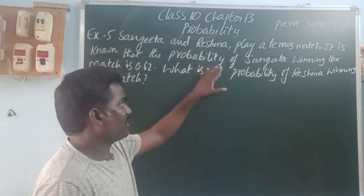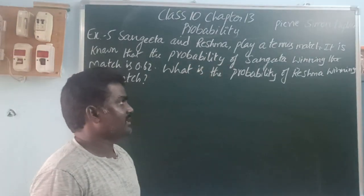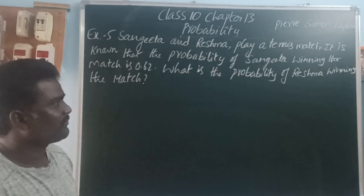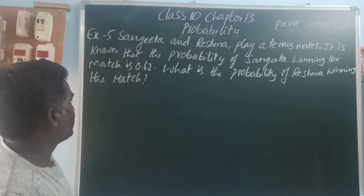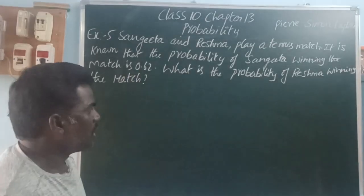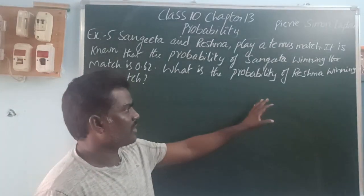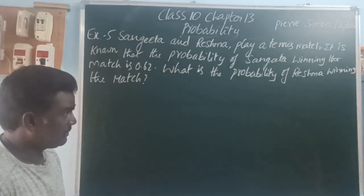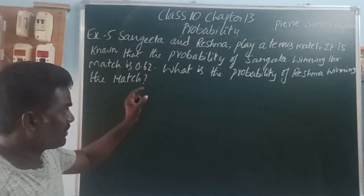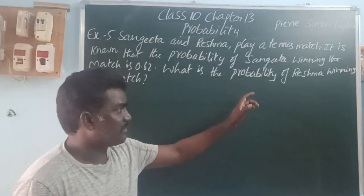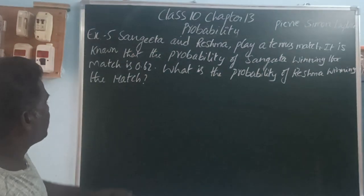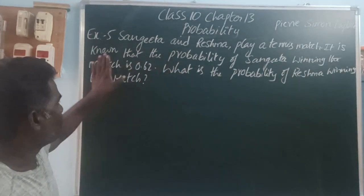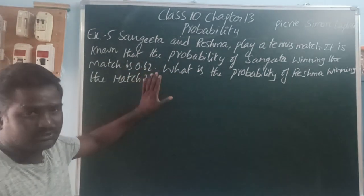Sangeetha and Reshma play a tennis match. It is known that the probability of Sangeetha winning the match is 0.62. What is the probability of Reshma winning the match? So, here, Sangeetha winning match is 0.62.